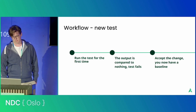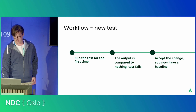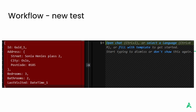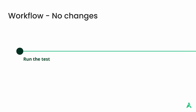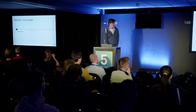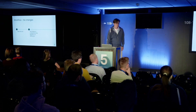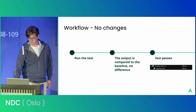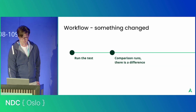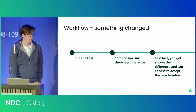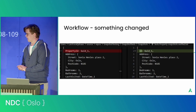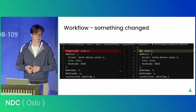We then get to accept that change and establish a new baseline. That step might look something like this, shown in your favorite diff tool. If we run the test later and nothing has changed, we compare it to the baseline, there are no changes, and we have a passing test. But if something has changed, there is a difference, the test fails, you're shown the diff, and you can choose to accept the new baseline — or if it's not intentional, reject it and fix your code.